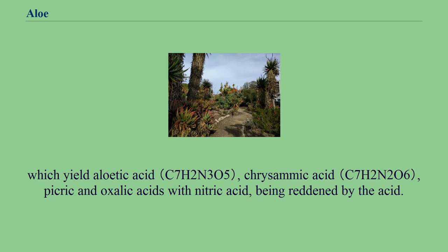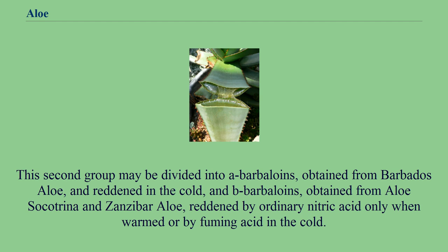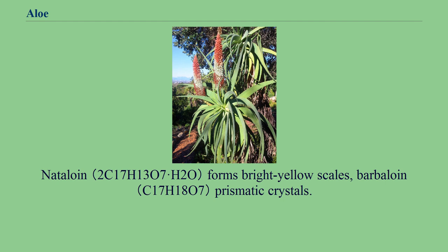The second class is barbaloins, which yield aloeic acid, chrysamic acid, picric and oxalic acids with nitric acid, being reddened by the acid. This second group may be divided into A-barbaloins, obtained from Barbados aloe and reddened in the cold, and B-barbaloins, obtained from aloe socotrina and Zanzibar aloe, reddened by ordinary nitric acid only when warmed or by fuming acid in the cold. Nataloin forms bright yellow scales; barbaloin forms prismatic crystals.